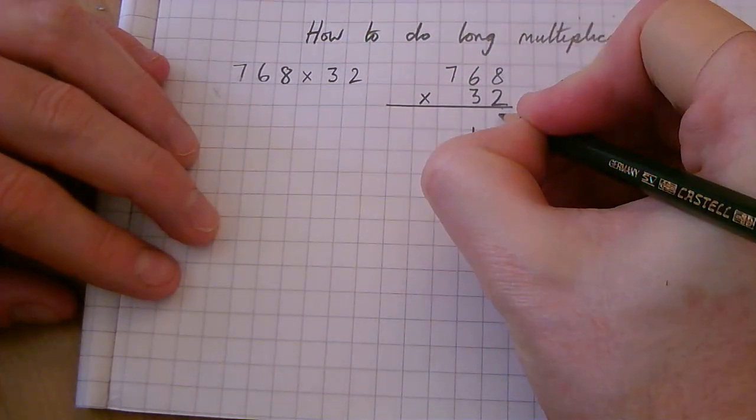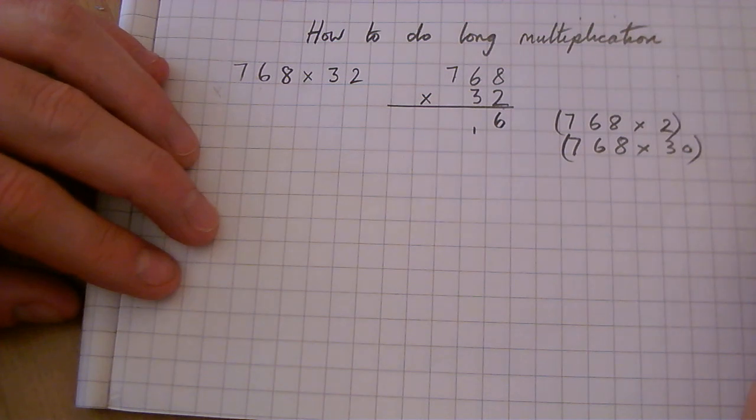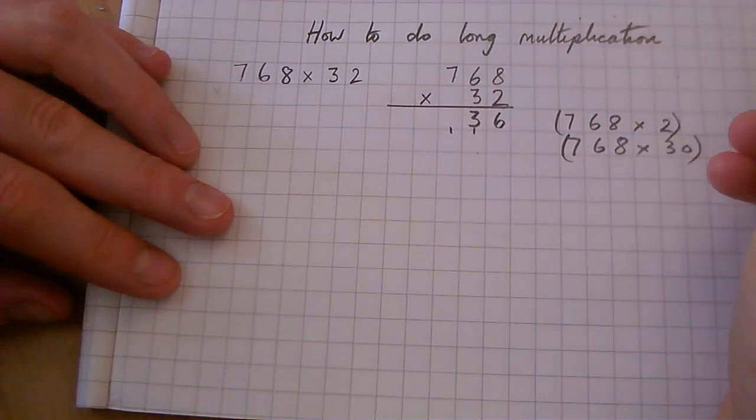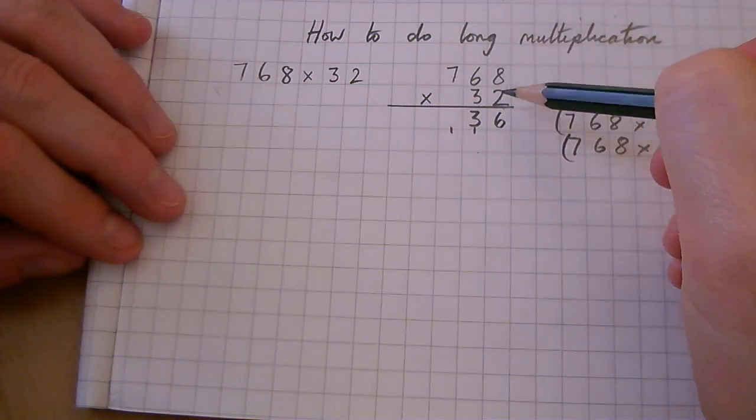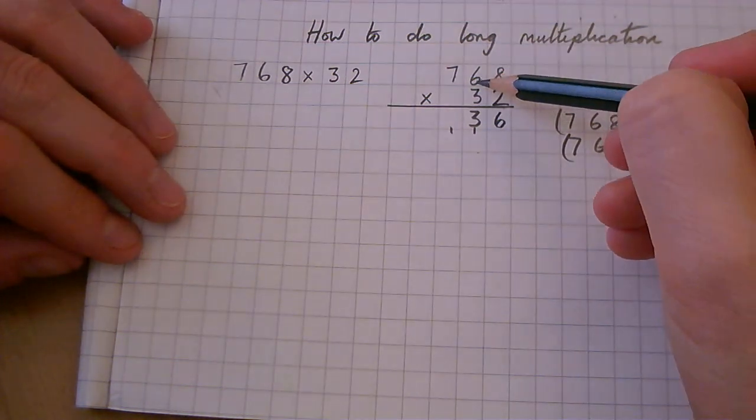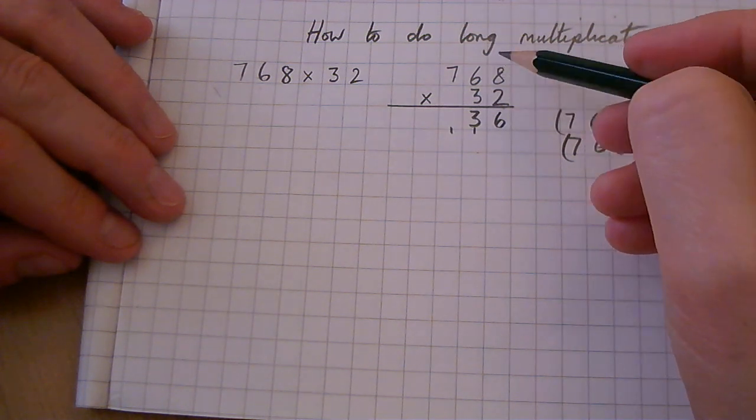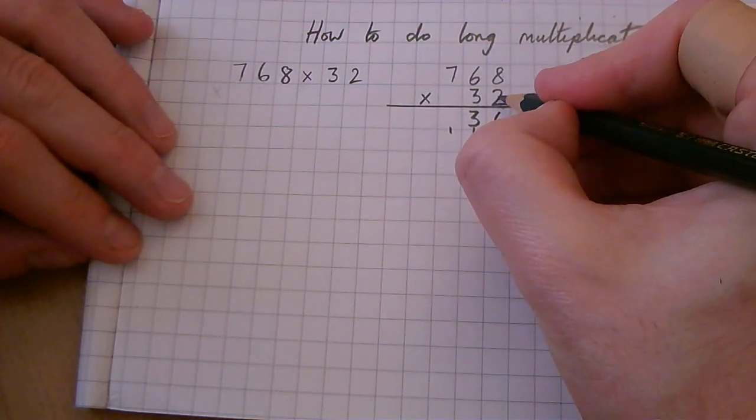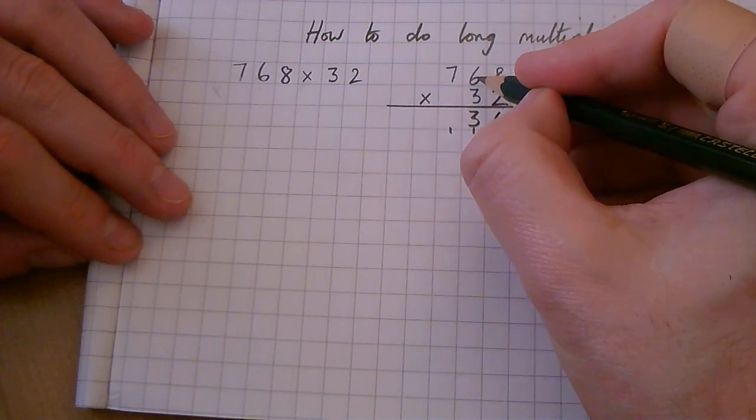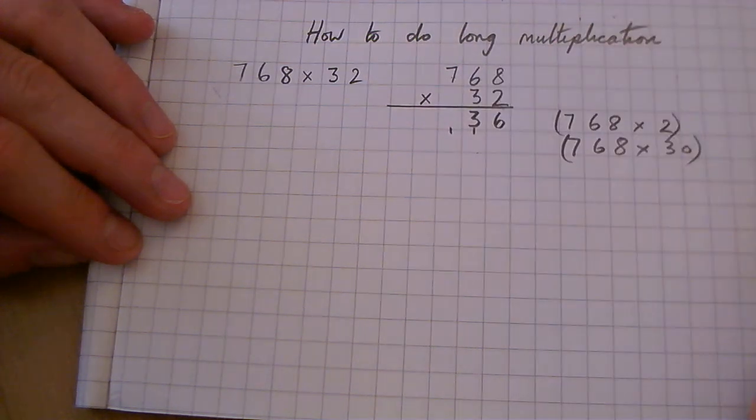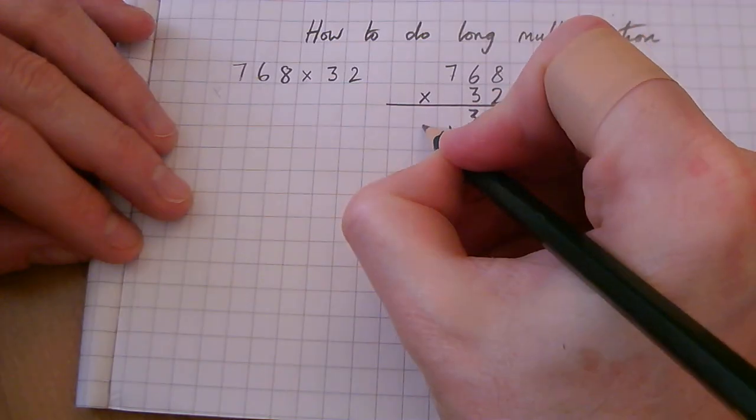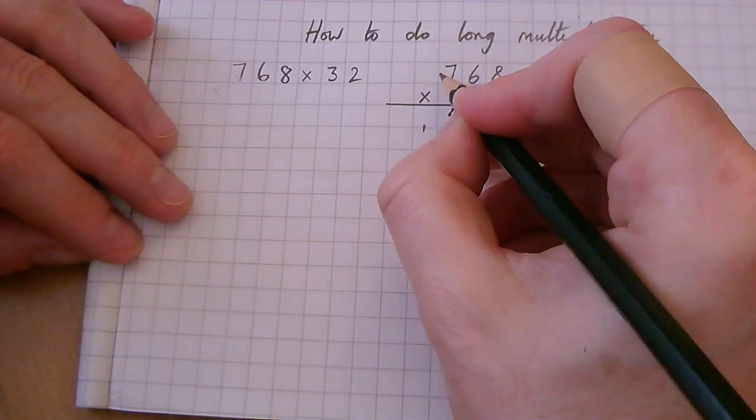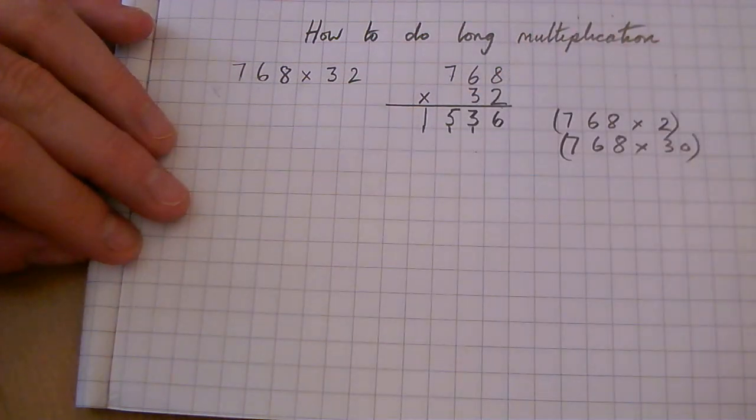2 times 8 is 16. 2 times 6 is 12 and the 1 is 13. Just a reminder that this isn't 2 times 6, it's 2 times 60, or 2 times 6 tens. However, for this method we can say to ourselves 2 times 6. Now we need to do 2 times 7. 2 times 7 is 14 and the 1 is 15. We've got this 1 here and there's nothing else to multiply 2 by, so that 1 just goes there. So that's the first line.